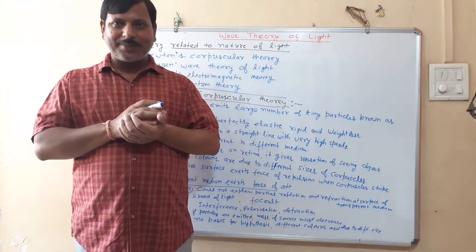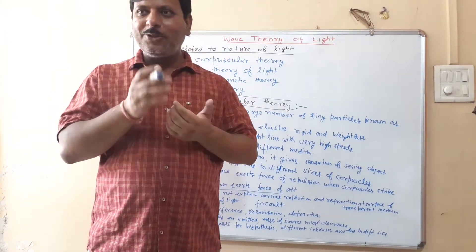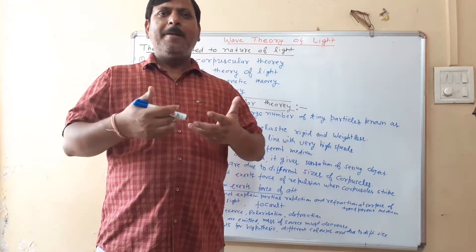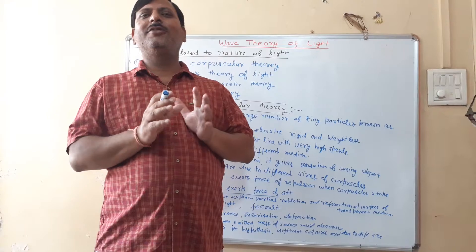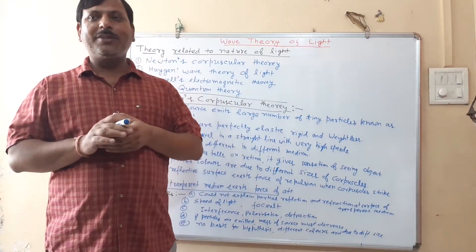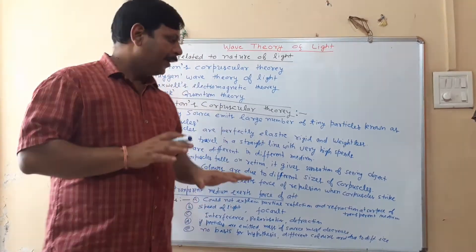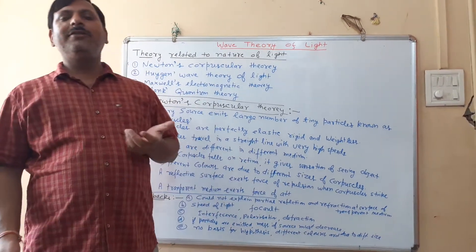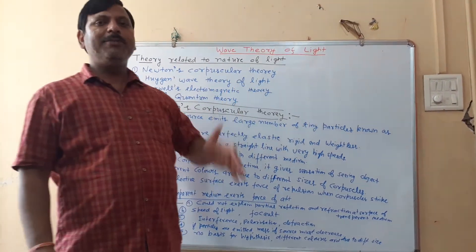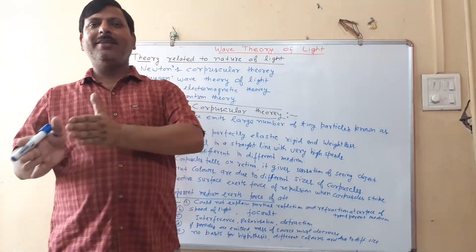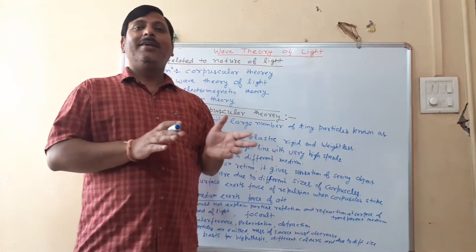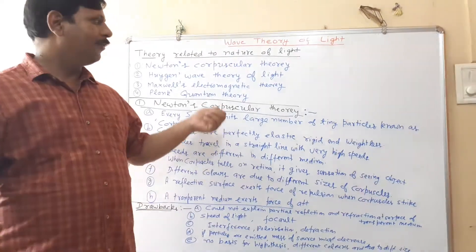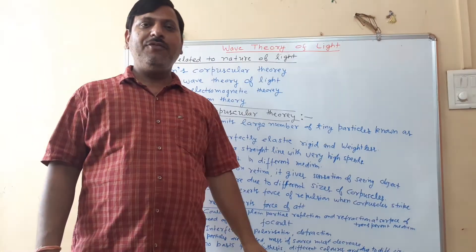Different colors corresponding to different sizes of particles is only a hypothesis and was not proven practically or experimentally. These are Newton's drawbacks. Due to these drawbacks, a new theory was proposed. Next, we will discuss Huygens' wave theory of light.